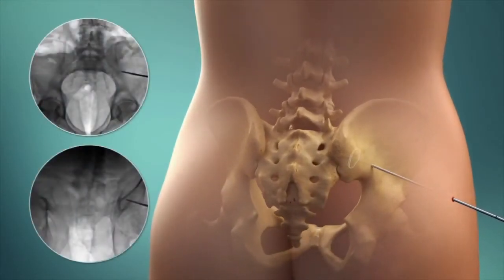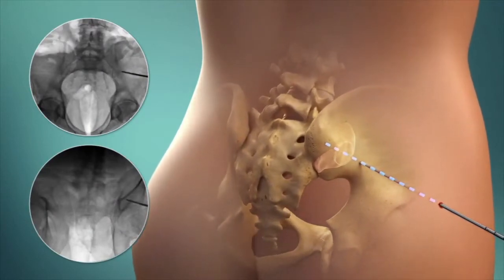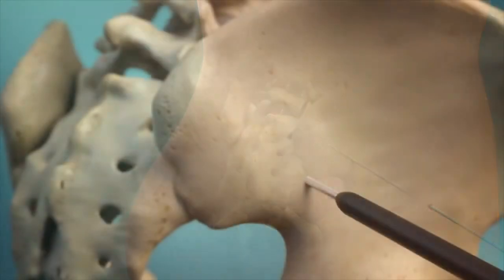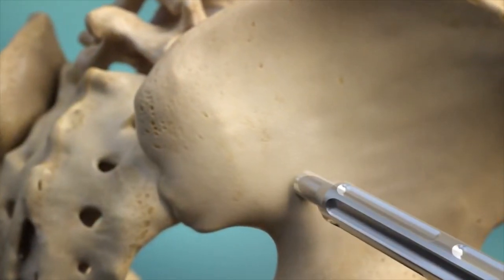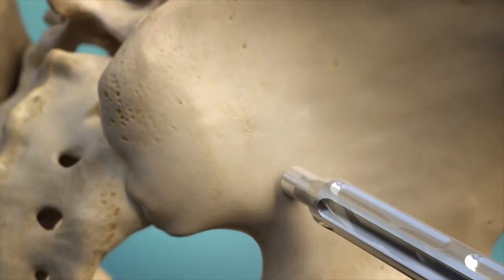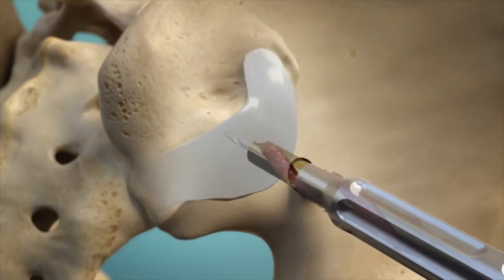To begin, a guide pin is used to target the SI joint and ensure a final position within the safe zone of the sacrum. A dilator and working cannula are then inserted to create a channel through which a drill accesses the joint. The drill flutes collect autologous bone from the ileum for later grafting.